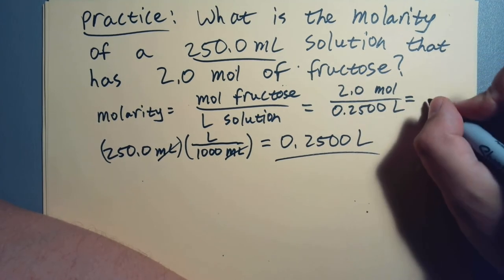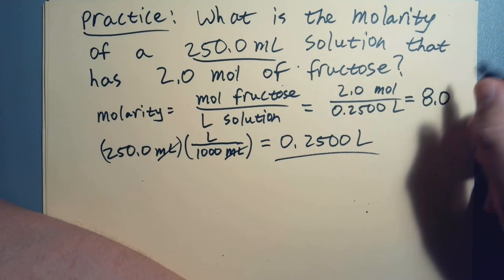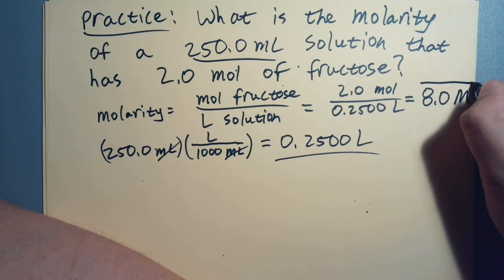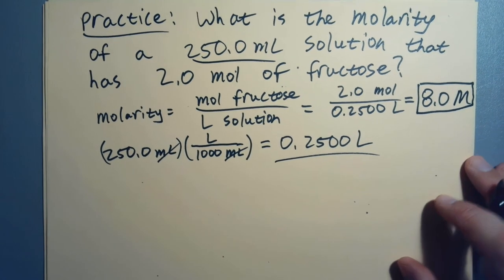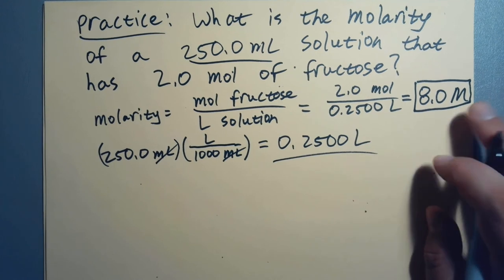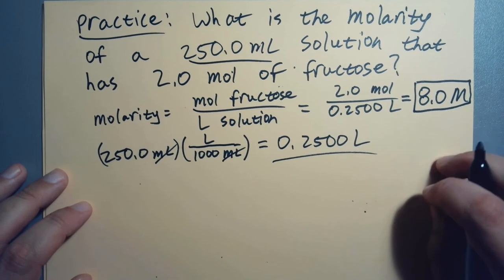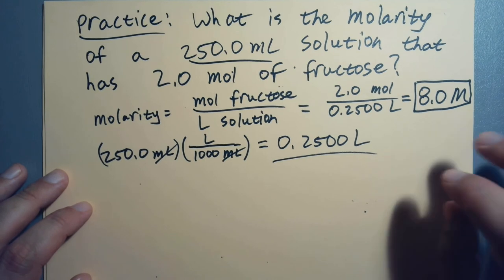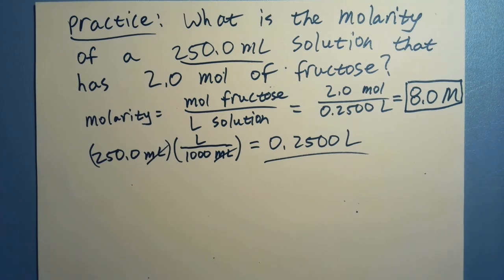So I've got 2.0 moles over 0.2500 liters. And do I multiply by 100% here? No, I don't. And I do the math. I get 8.0 molar solution. Big capital M. Doesn't get any easier than that. Don't need to write moles over liters. I can just write big capital M because chemists are too lazy to write moles divided by liters over and over again.